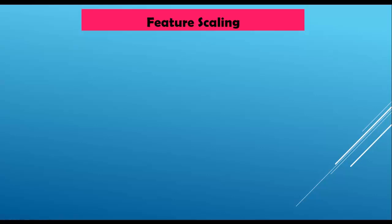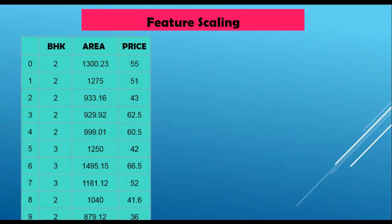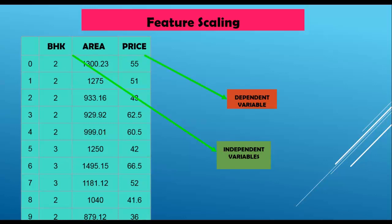Hello coders, welcome to this video where we are going to discuss feature scaling, also called data normalization. It is a very important step in data pre-processing and is the last step before machine learning model training. We are going to use a house price prediction dataset. The dataset contains two independent variables — BHK and area — and price, which is our dependent variable, also called the target variable. Independent variables are also called features; the dependent variable is also called the target or response variable.